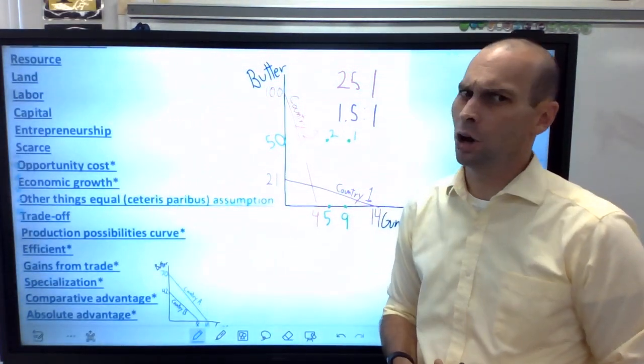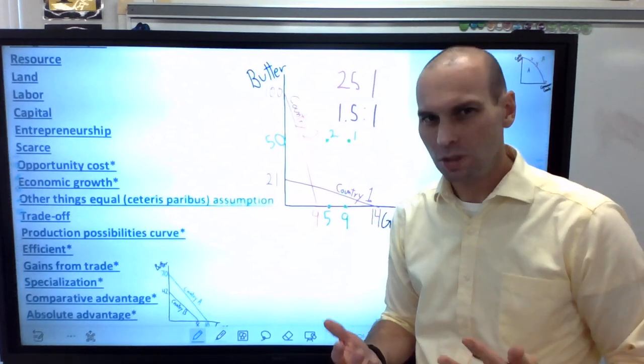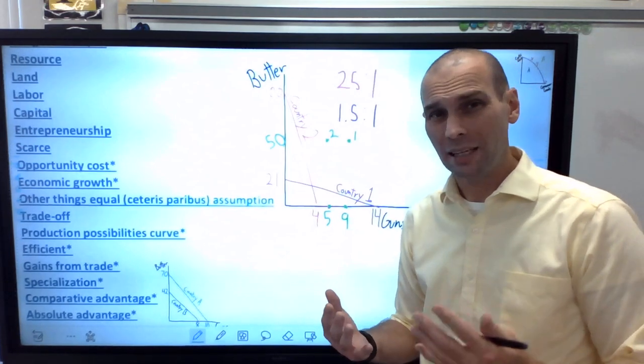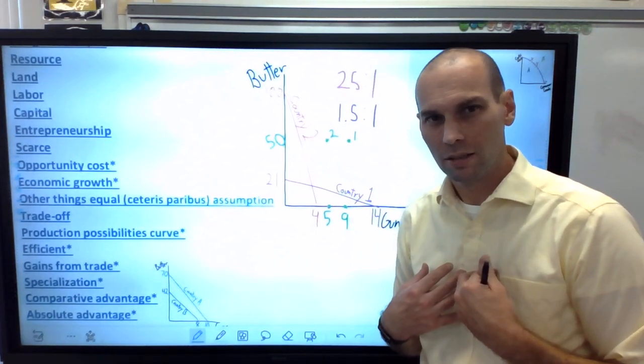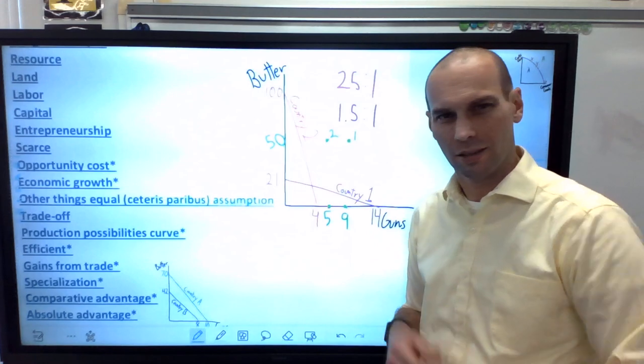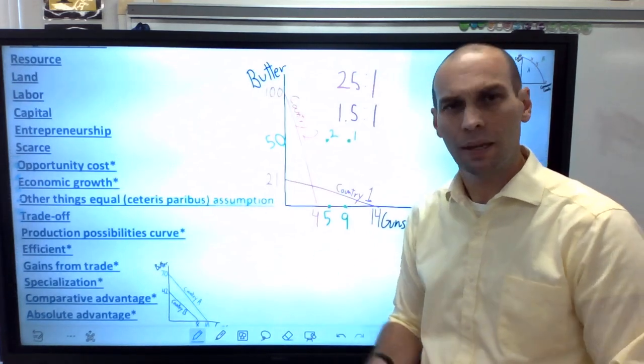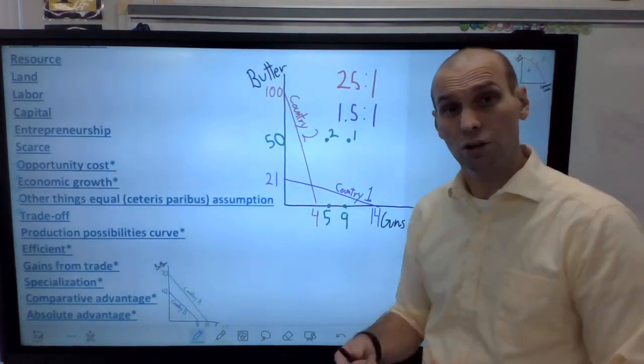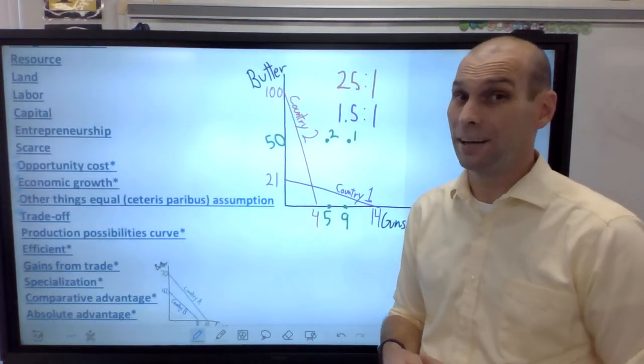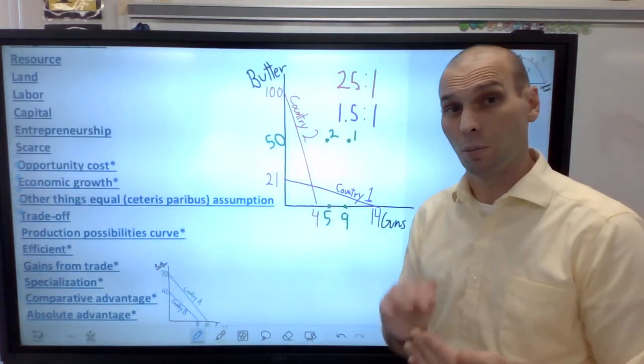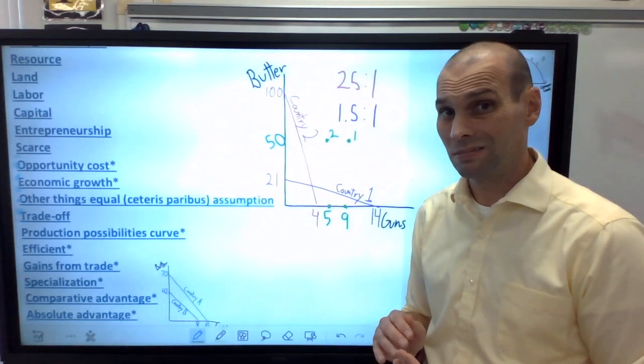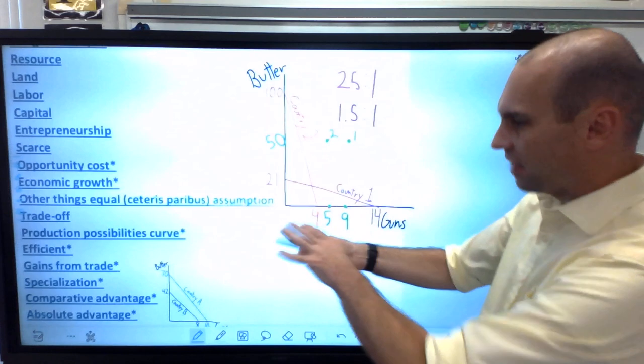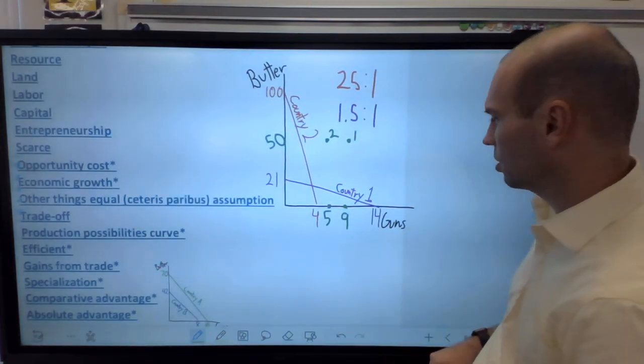Now, if they decided to trade, they could trade at a ratio of 10 to one. So that means for every gun that country one makes, they would get 10 butters from country two. And if they were able to do that, and both countries traded five guns for 50 butters, country two would have 50 butters left and five guns. Remember they could only make four by themselves and now they have five and they're producing outside of their production possibilities curve. On the other hand, country one got 50 units of butter and they have nine guns, which means country one is way outside their production possibilities frontier too. This is why we call it gains from trade.